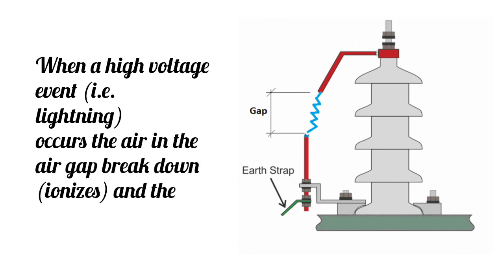When a high-voltage event, for example lightning, occurs the air in the air gap breaks down, ionizes, and the energy arcs to earth.